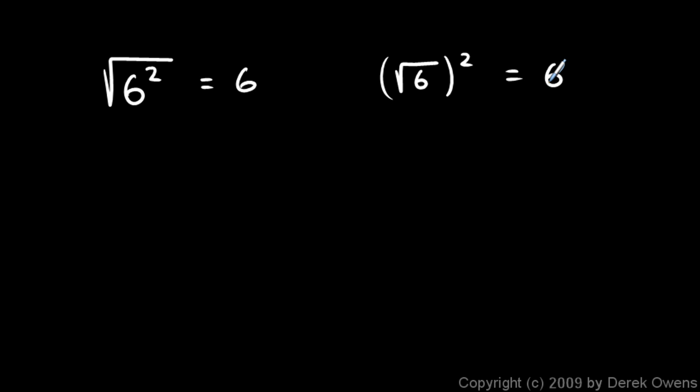So in general, you could state that concept in general terms like this. The square root of a squared is equal to a for any number a. And you could also say the square root of a squared is equal to a for any number a. So no matter how they're arranged, square rooting and squaring something will have no effect. The square root undoes the squaring.